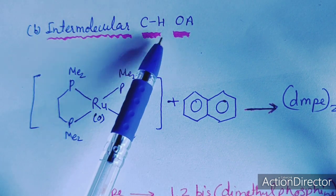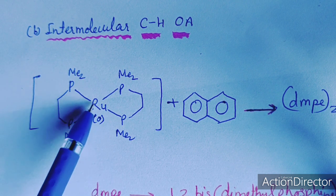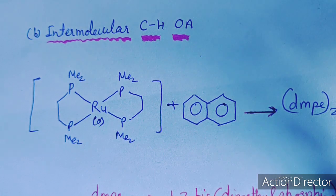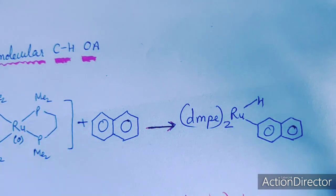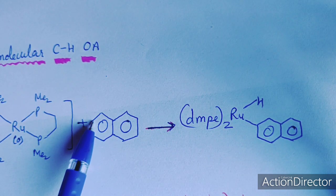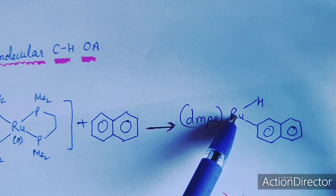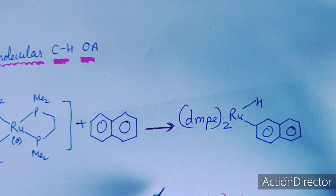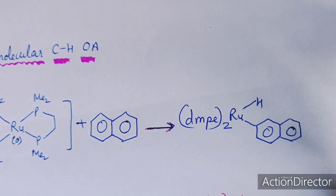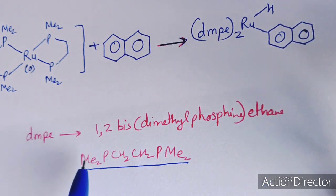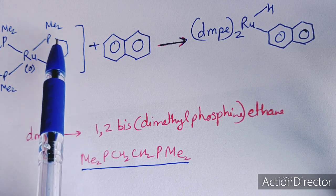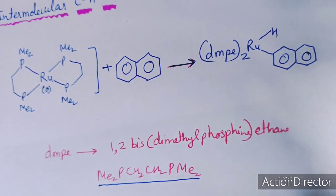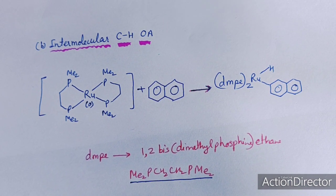This is the example of intermolecular CH oxidative addition. Ru is in zero oxidation state. When a hydrocarbon is added to this compound, the hydrocarbon oxidatively adds to the Ru center: the CH bond activates, the H adds to Ru and the other moiety also adds to Ru. This is intermolecular CH oxidative addition. The DMPE ligand is 1,2-bis(dimethylphosphino)ethane, written as Me2PCH2CH2PMe2.